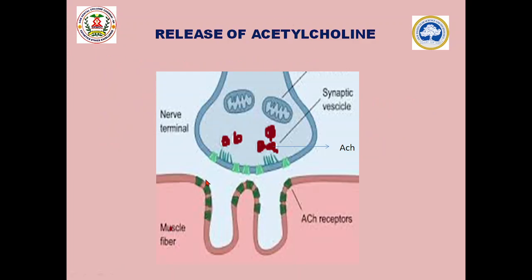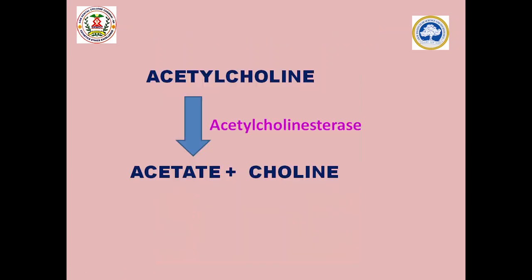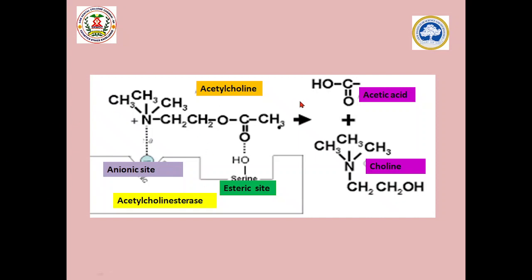Coming to the release of acetylcholine: acetylcholine is stored in vesicles, which fuse with the neuronal membrane and get released into the synaptic cleft. The released acetylcholine binds with receptors present in the post-neuronal membrane. Immediately after the reaction, this acetylcholine is metabolized by the enzyme true cholinesterase, which splits acetylcholine into acetate plus choline through rapid hydrolysis.